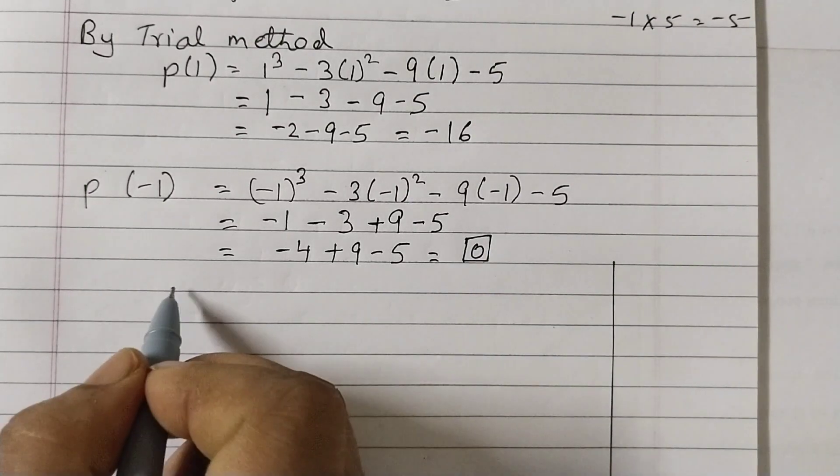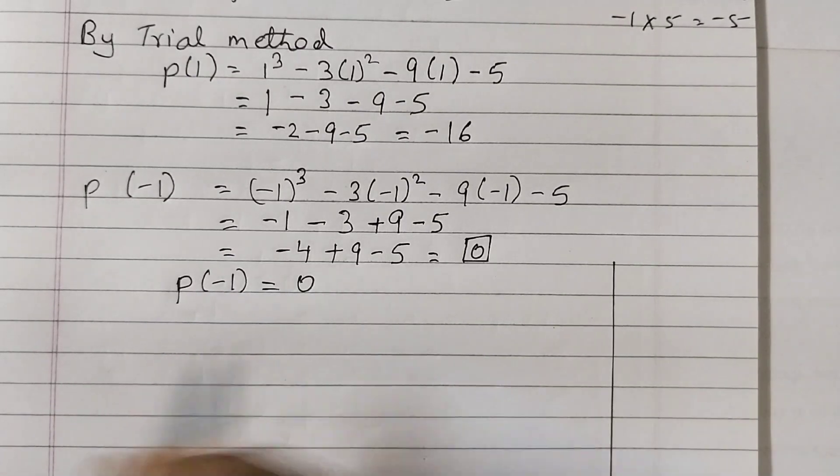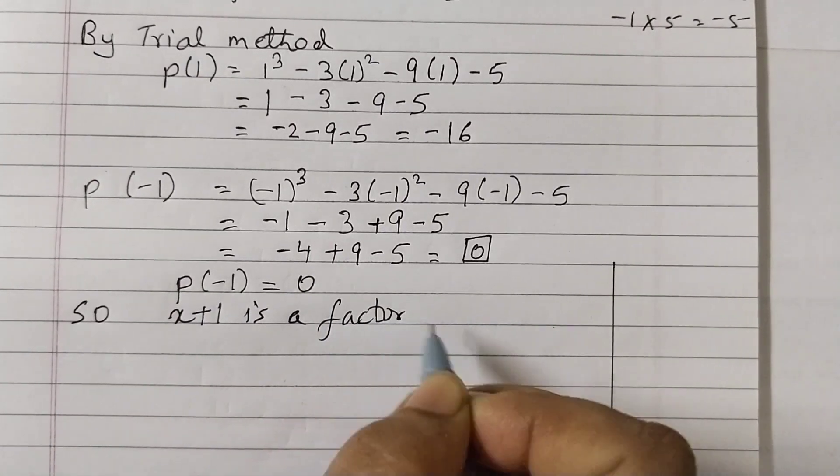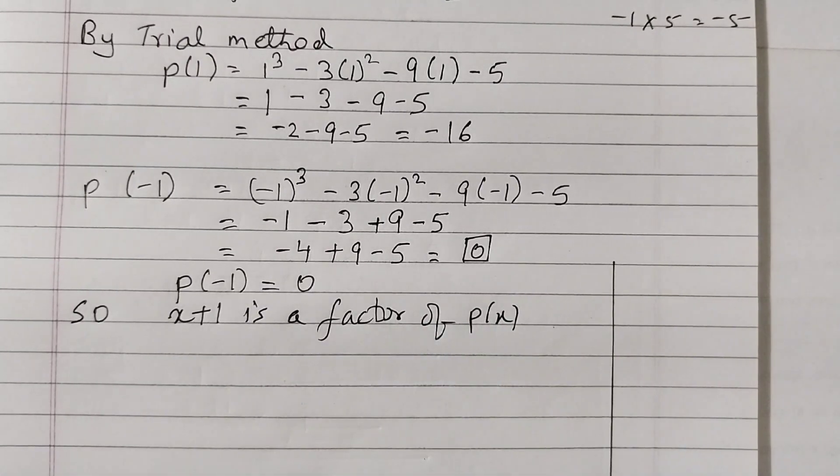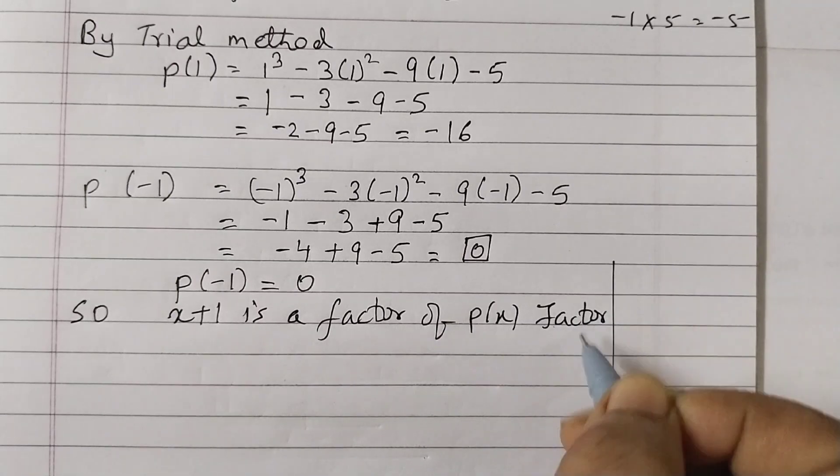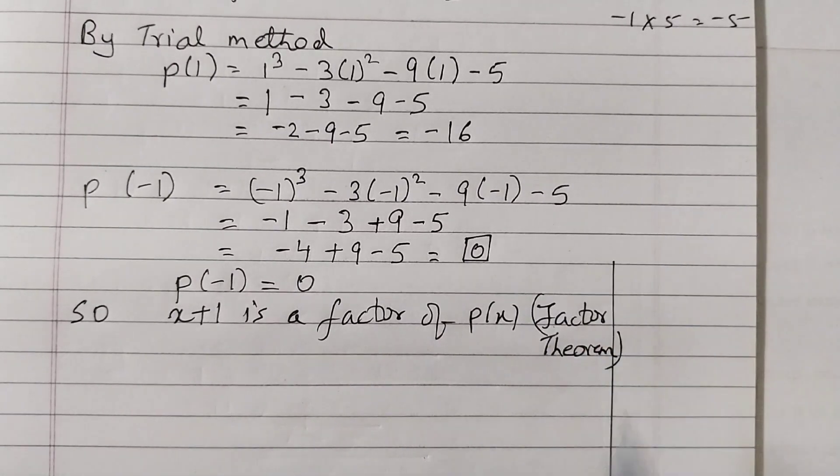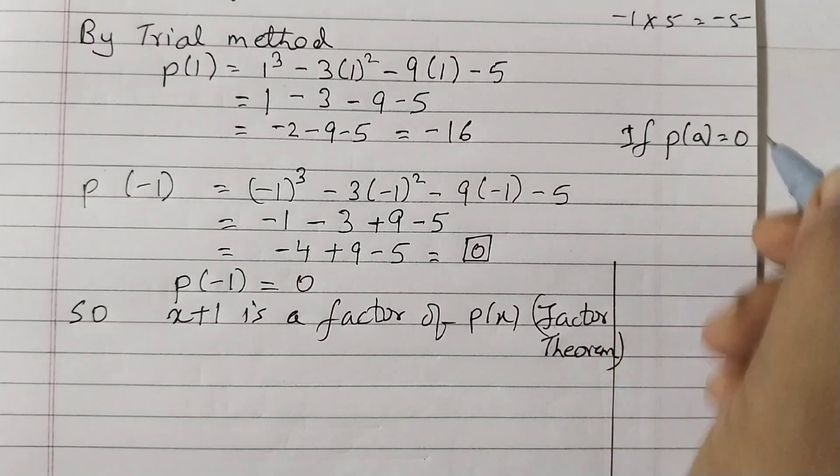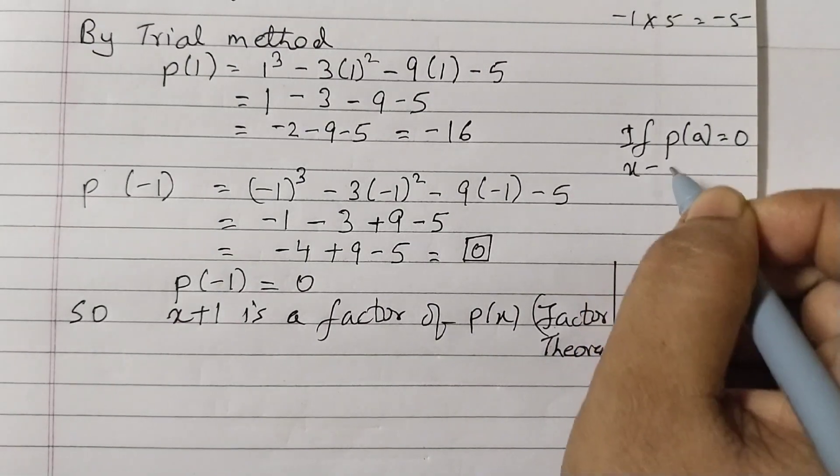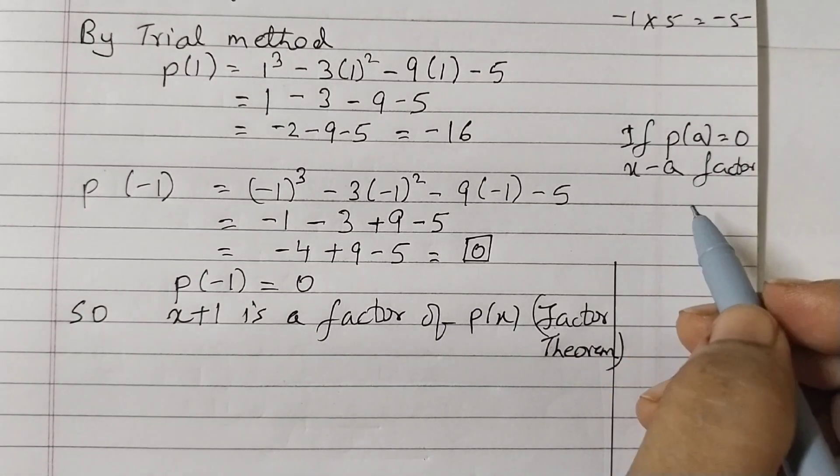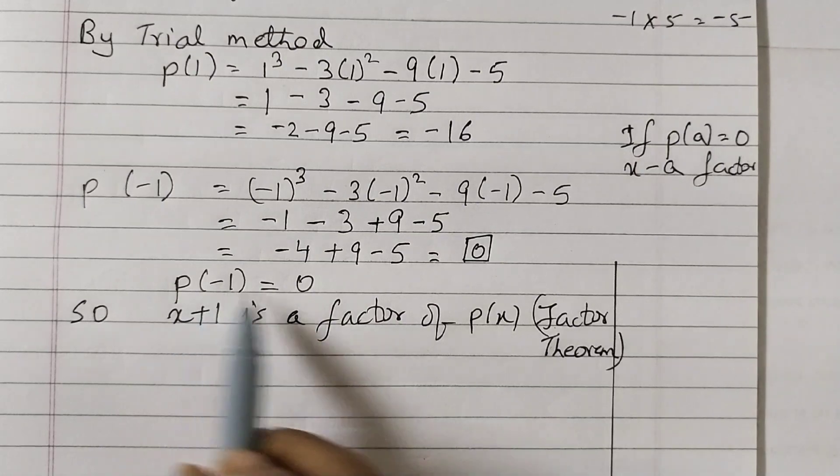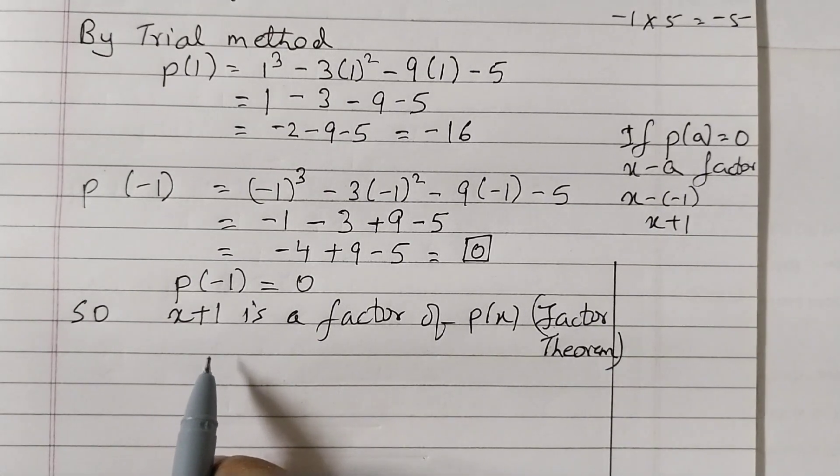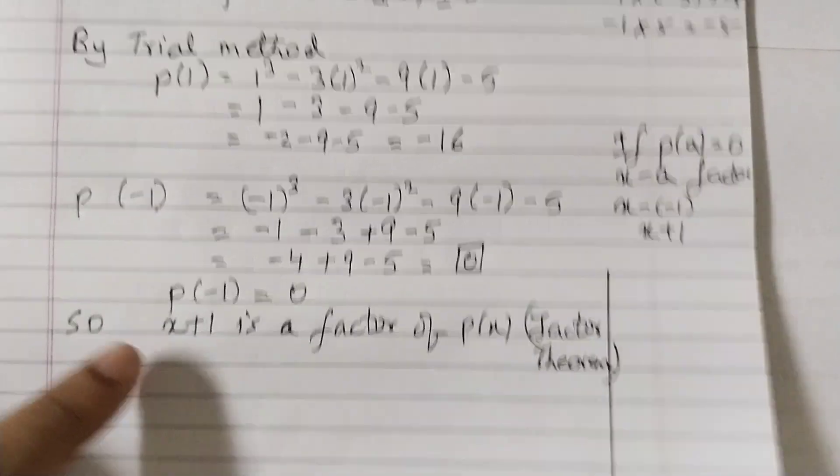And when you simplify this, you would get a 0. So we got a 0, that means P of minus 1 is equal to 0. So x plus 1 is a factor of P(x) and this is by factor theorem. This is one of the factors of the given polynomial.